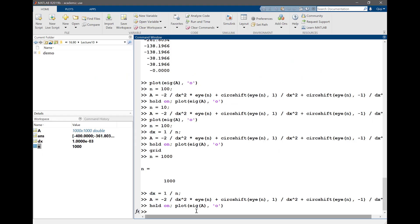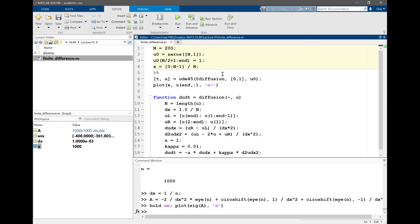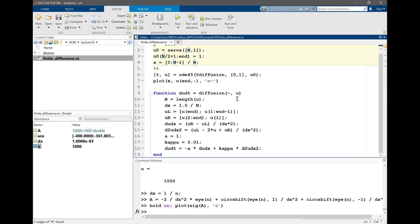But before we discuss what we can do to remedy that, let's actually try to solve this equation using the same scheme we have used before. So I'm going to copy the same finite difference code that we wrote last Monday. And do dt equal to diffusion. So let's just call it Burgers. That's the Burgers equation.